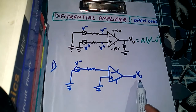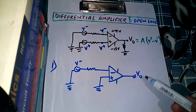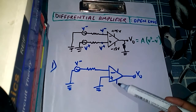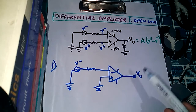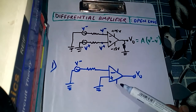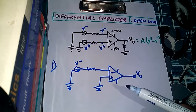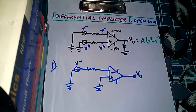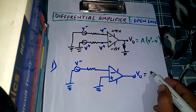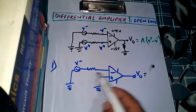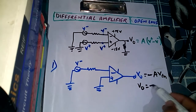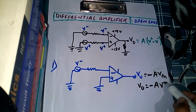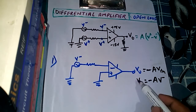Now we need to find the output. To do that we must identify what circuit this is. We can see this is an inverter circuit with open loop, because there is voltage only at the negative terminal and there is no feedback. So what is the output? Since the input is to the negative (inverting) terminal, the output is minus A times V-input, which means minus A times V-minus, because the input voltage is V-minus.